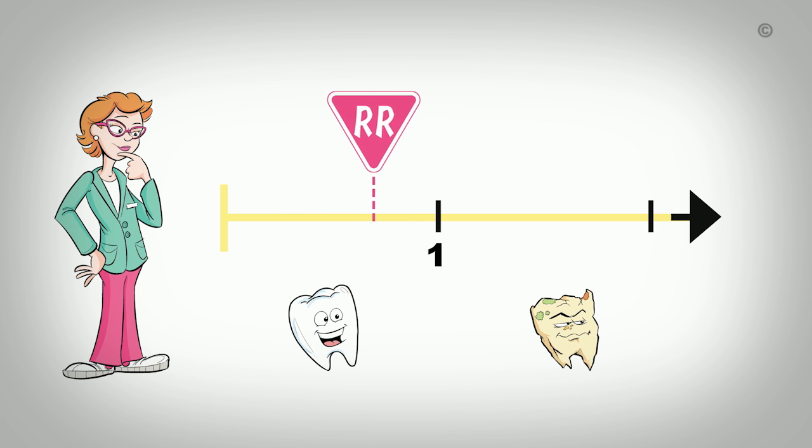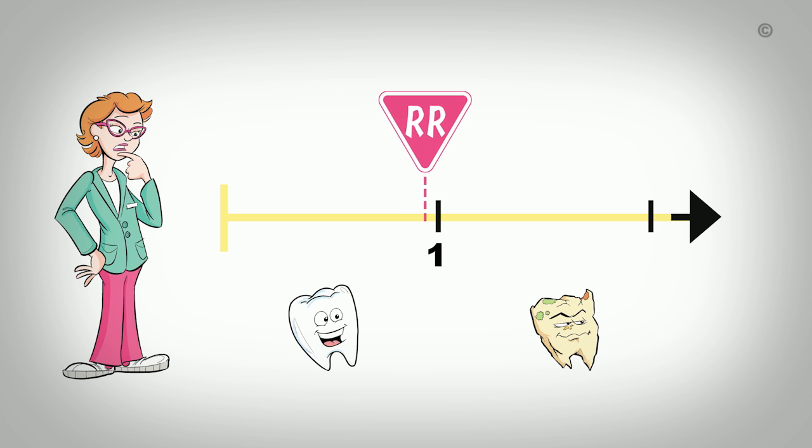As the RR moves closer to 1, there is less difference in the risk for dental caries among those who receive the education and those who do not, indicating that the intervention had less of an effect. In this example, an RR below 1 constitutes a positive outcome because we hope to reduce the risk of dental caries. However, there are many instances in public health when we want to see more of an event, in which case an RR above 1 would represent a positive outcome.